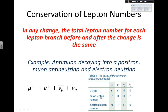Let's see if the muon lepton number is conserved. The antimuon has muon lepton number minus 1. Then the positron — that's not a muon — so it has 0 for muon lepton number. The electron neutrino is also not a muon, so it has 0 for muon lepton number. And finally the muon antineutrino has minus 1, because it's an antiparticle — an antilepton — so it has a lepton number of minus 1. So the muon lepton number is conserved; this interaction can happen.